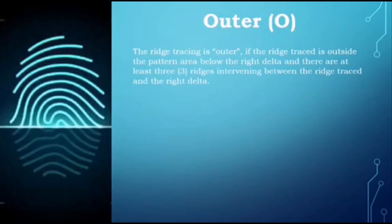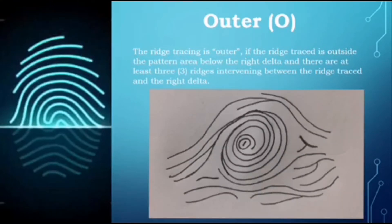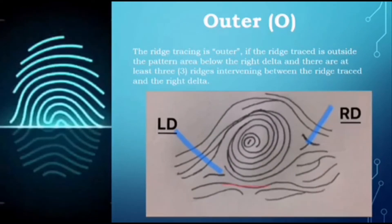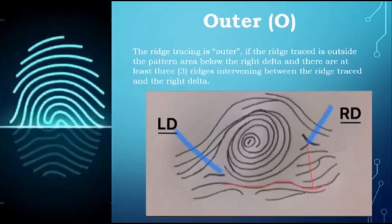Next is outer. The ridge tracing is outer if the ridge trace is outside the pattern area, below the right delta, and there are at least three ridges intervening between the ridge trace and the right delta. Here is an example using a plain whorl — we first identify the left delta and the right delta, then start tracing below the left delta, continuing until we reach the near point of the right delta. We draw an imaginary line and count the intervening ridges: one, two, three, four. Since there are at least three ridges intervening and the trace is outside the pattern area, this whorl pattern is classified as outer.